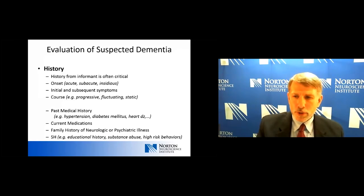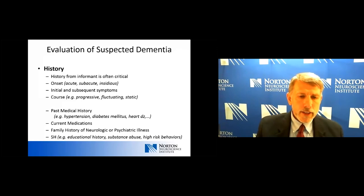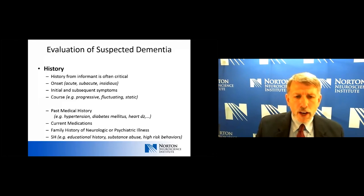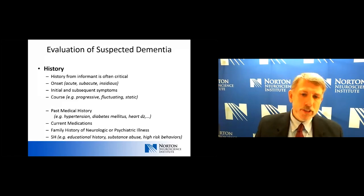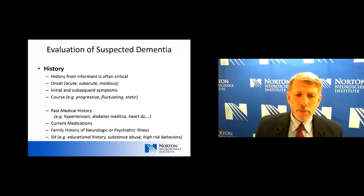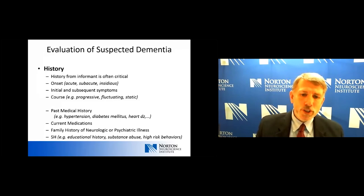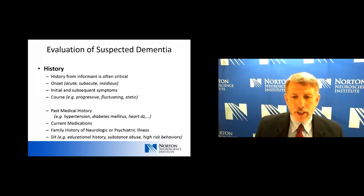Key history elements include the onset — was it acute, subacute, or most commonly an insidious gradual progression over years? We want to know the initial symptom — was it a problem with recent memory, language, or something else? Then the course — is it progressive, fluctuating, or static? Other important elements: past medical history, particularly vascular risk factors like hypertension, diabetes, and heart disease; current medications; family history; and social history including educational background, history of substance abuse, or other high-risk behaviors.